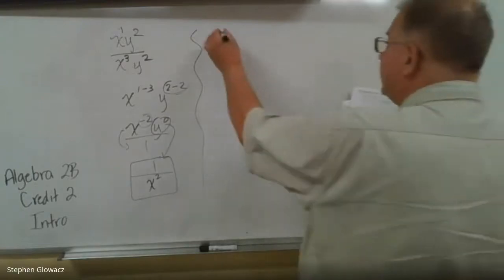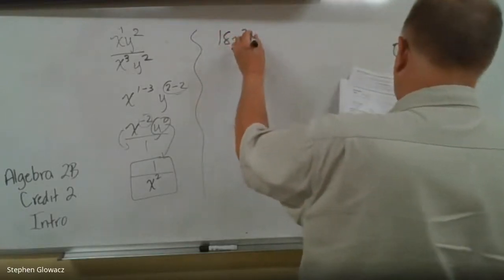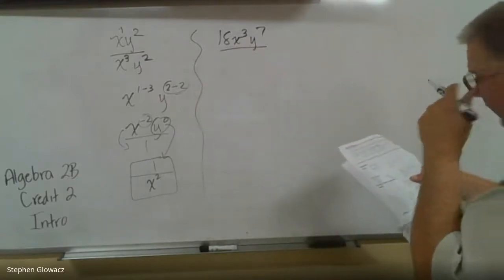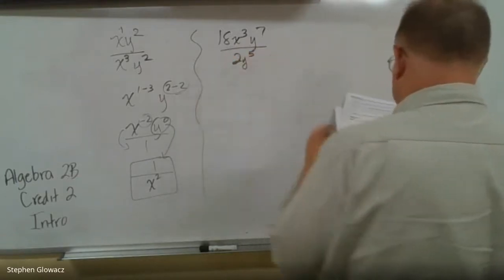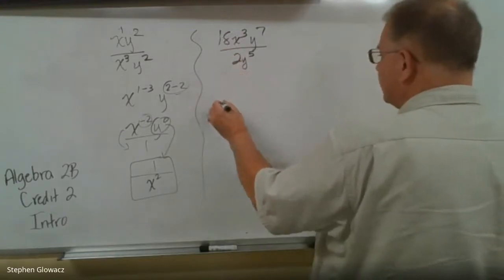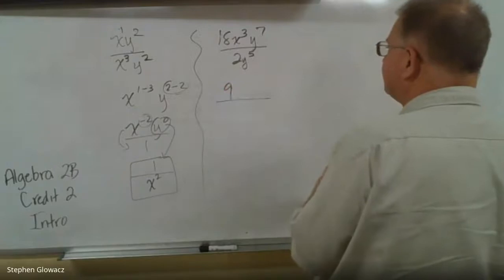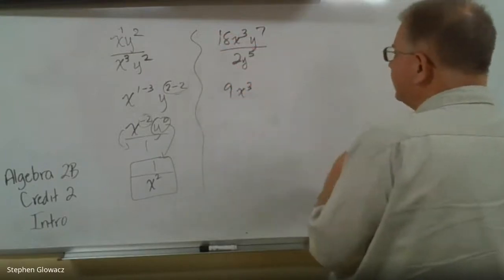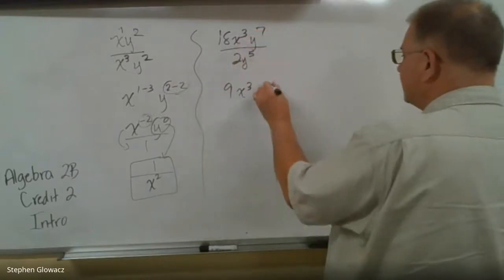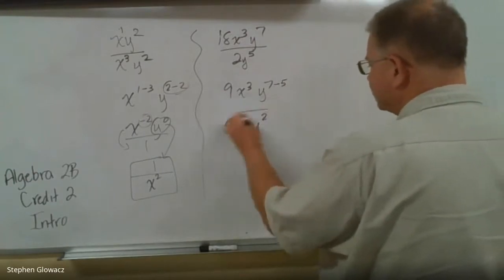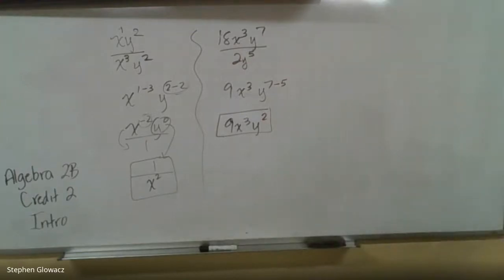Number 2: we have 18x to the 3rd, y to the 7th, over 2y to the 5th. This time we have coefficients to divide out. 18 divided by 2 is 9. With the x's, there's nothing on the bottom to combine with, so x to the 3rd stays. With the y's, we have 7 minus 5, which is 2. So we end up with 9x to the 3rd, y to the 2nd. No negative exponents, so no fraction needed.